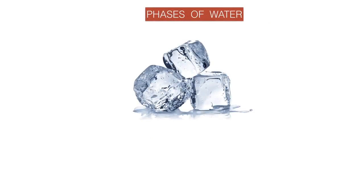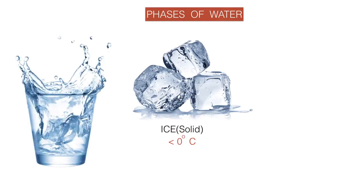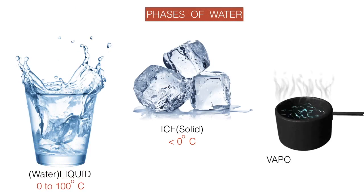Let's begin with phases of water. We have three phases of water: solid state, that is ice, which exists at less than 0 degree Celsius temperature. Second phase is liquid which exists at 0 to 100 degree Celsius temperature, and third phase is vapor, that is a gaseous state, which exists at greater temperatures than 100 degree Celsius.